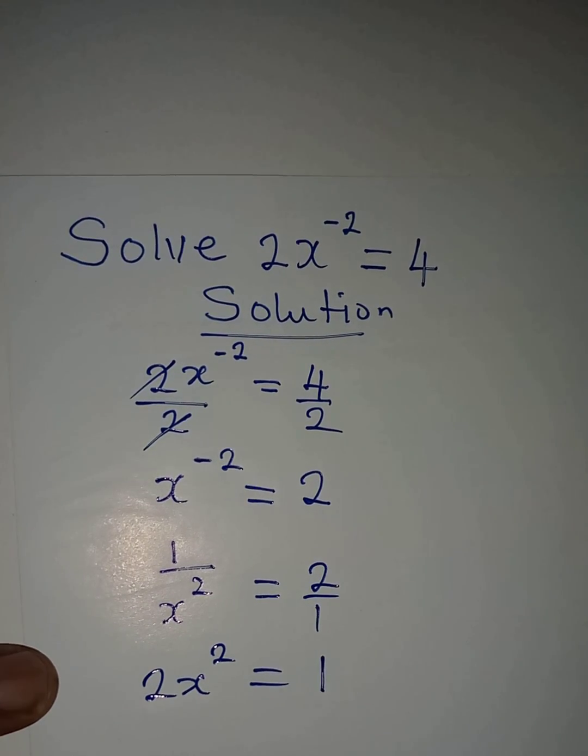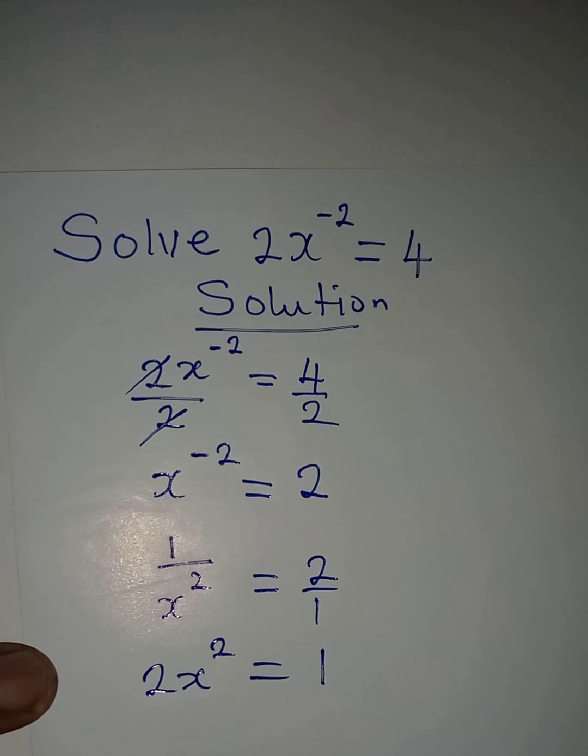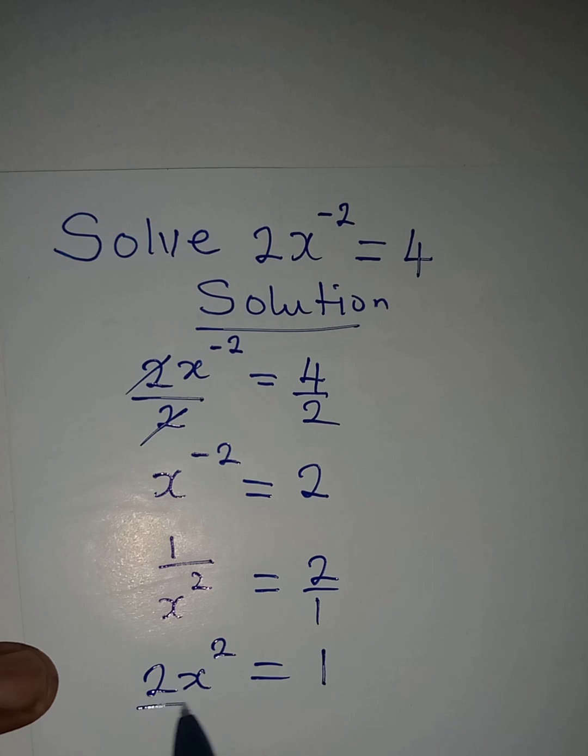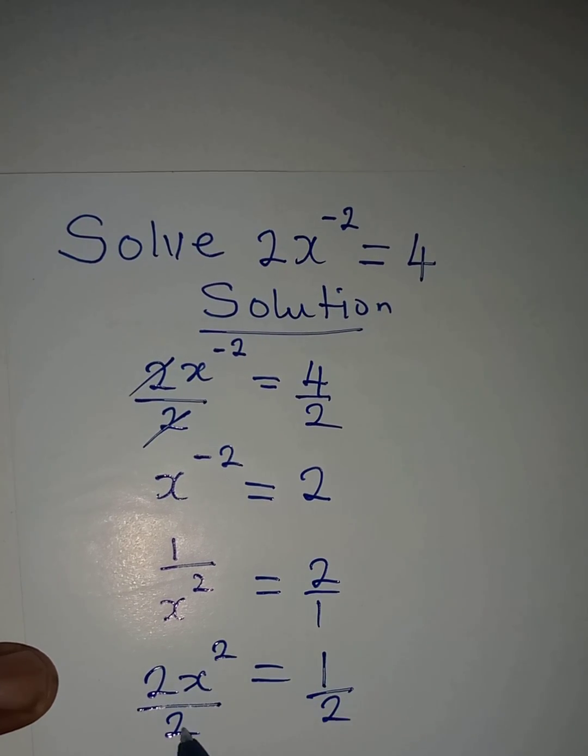And now we can divide both sides by 2 again. Divide this by 2 so that two can cancel two, then x squared will be equal to 1 over 2.